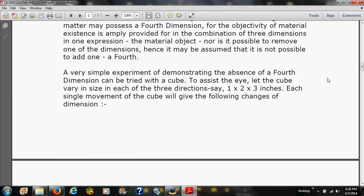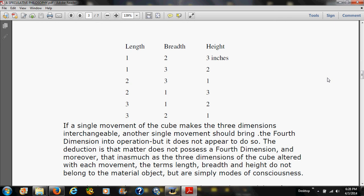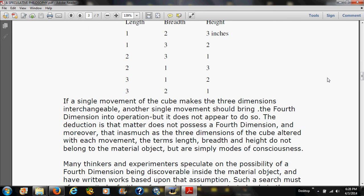A very simple experiment of demonstrating the absence of a fourth dimension can be tried with a cube. To assist the eye, let the cube vary in size in each of the three directions, say one times two times three inches. Each single movement of the cube will give the following changes of dimension: length, breadth, height. If a single movement of the cube makes the three dimensions interchangeable, another single movement should bring the fourth dimension into operation, but it does not appear to do so. The deduction is that matter does not possess a fourth dimension, and moreover, that inasmuch as the three dimensions of the cube altered with each movement, the terms of length, breadth, and height do not belong to the material object, but are simply modes of consciousness.